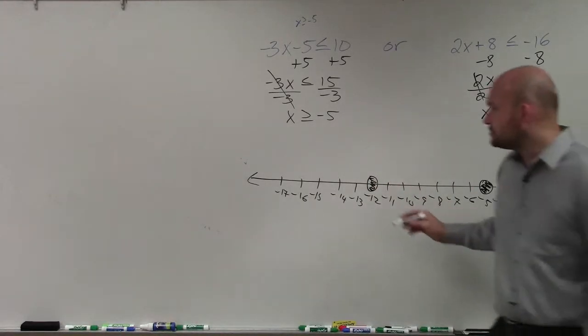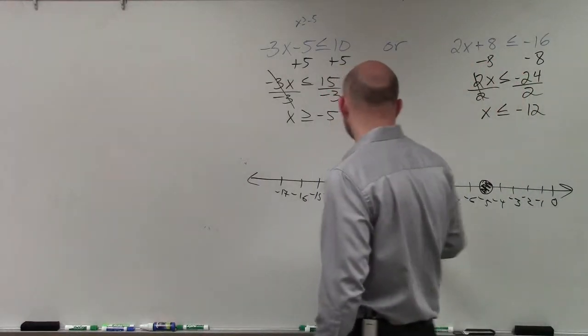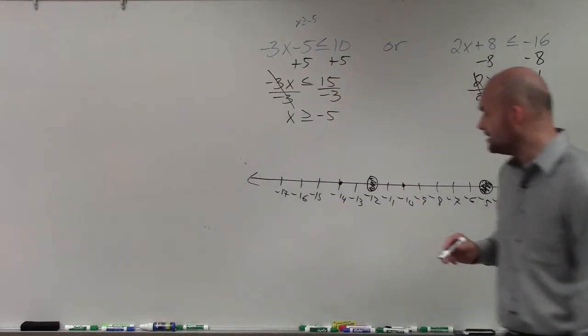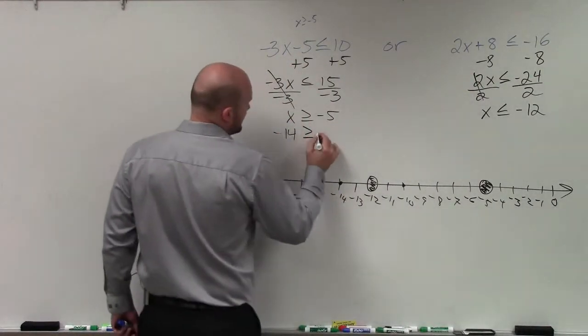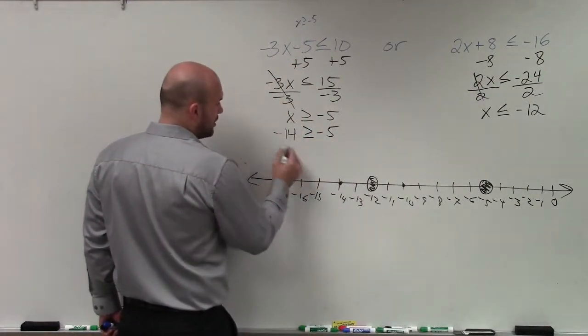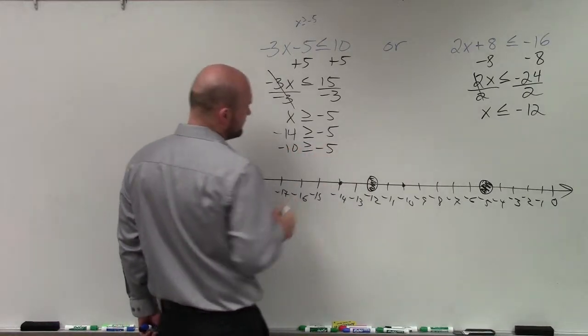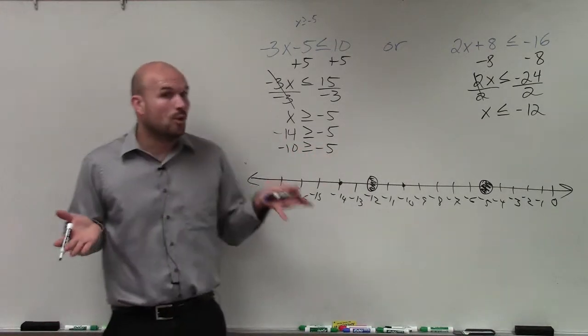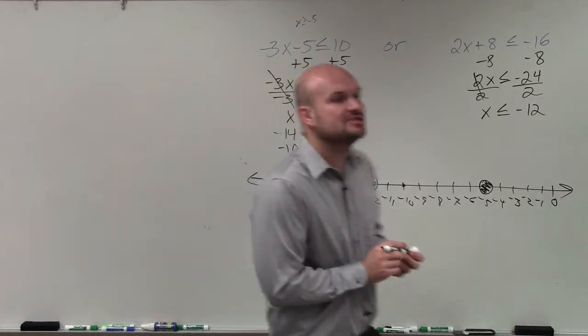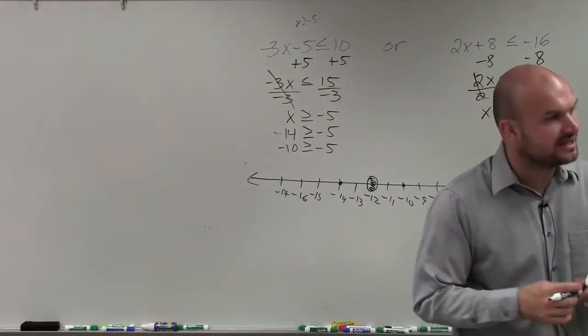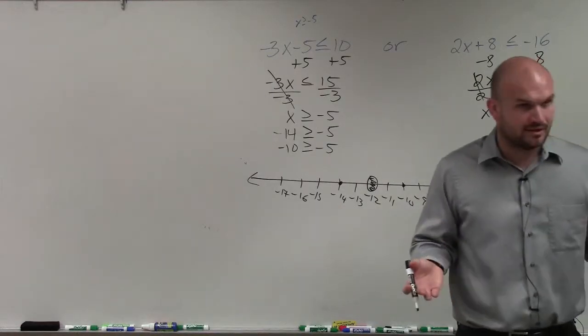We can also use test points. Now, to use test points, again, what I'm looking for is just picking a point to the left and to the right and plugging that point in for x. And again, one of the statements is going to be true. One of the statements is going to be false. And please just remember, when thinking about negatives, think of negatives as money you owe somebody.